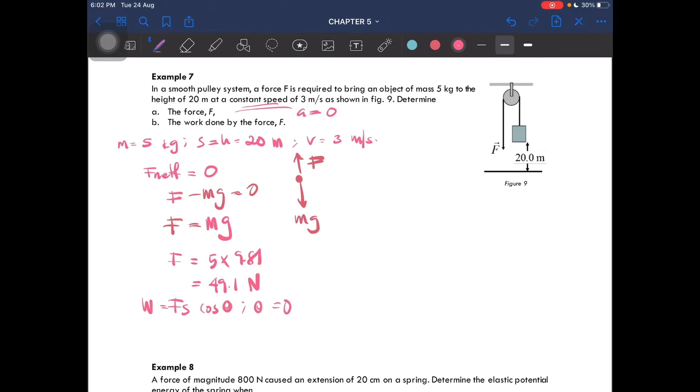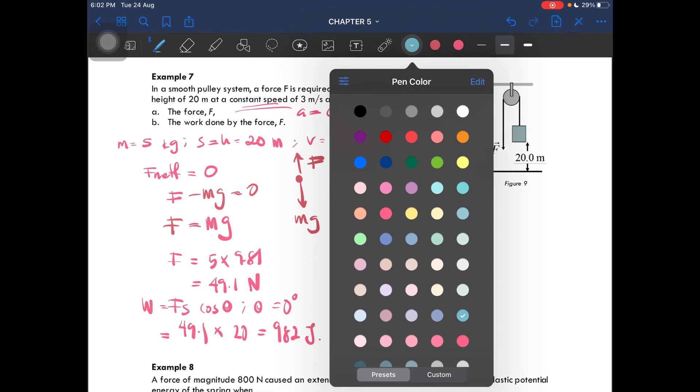And then we use the formula work equal to F s cos theta, where theta is equal to zero degrees because the displacement is going up and the force is parallel to the displacement. So you'll then get 49.1 times 20 which is equal to 982 joules.